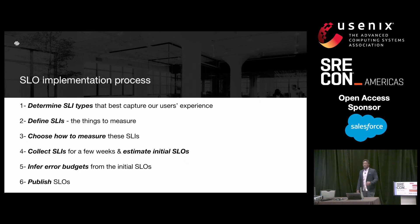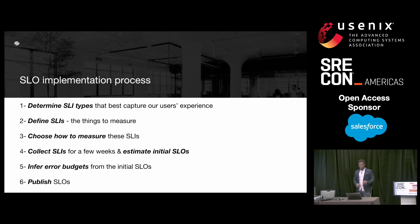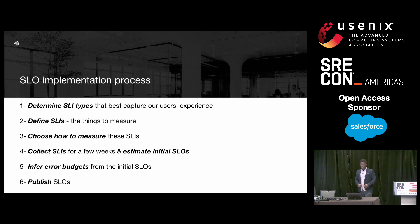Here's the process we followed for defining and measuring SLOs for our service. Number one, we determined what type of SLIs would best capture our users' experience. Two, we defined the actual SLIs, or the things to measure. Three, we chose an optimal way of measuring these SLIs. Four, we collected these SLIs for a few weeks to get a performance baseline for our service and estimated our initial SLOs. Five, based on these initial SLOs, we inferred some error budgets. Lastly, we published these SLOs, essentially making these SLO values available to our users for them to be aware of the reliability guarantees that our service offers.